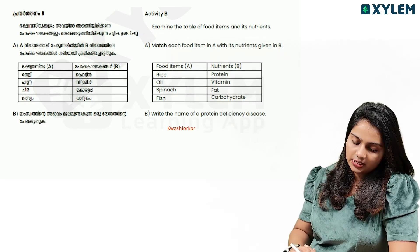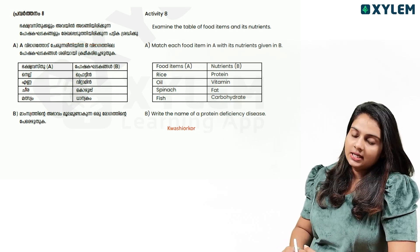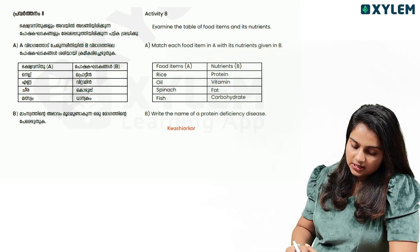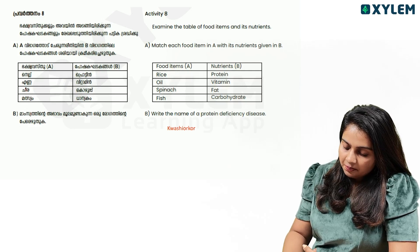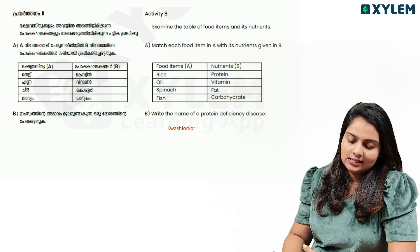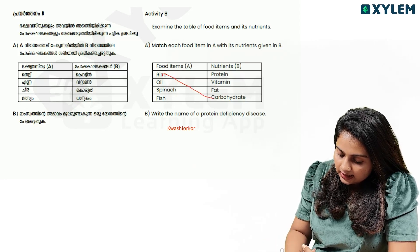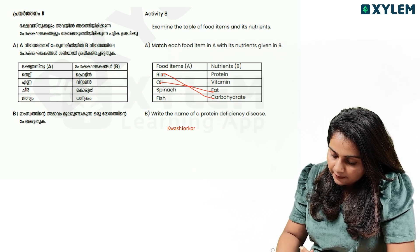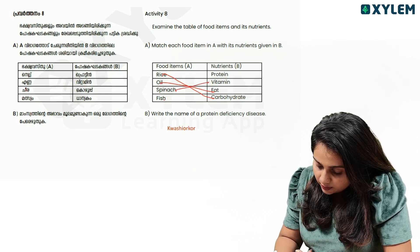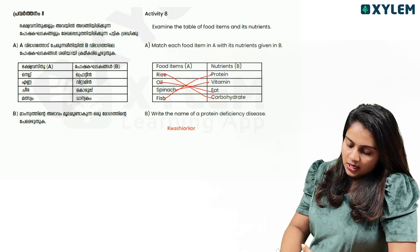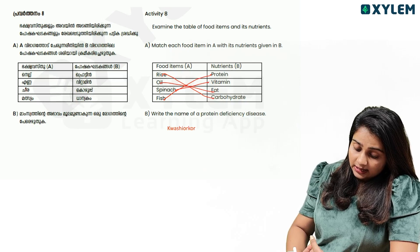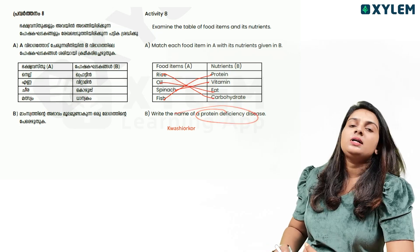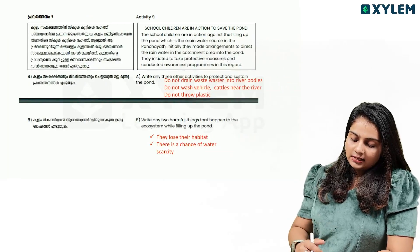Examine the table of food items and its nutrients. This is a table of food items and nutrients: rice, oil, spinach, fish — with protein, vitamin, fat, carbohydrate. Rice is carbohydrate, oil is fat, we use spinach in vitamins and fish in proteins. Write the name of the protein deficiency disease — if you have a protein deficiency, we will be sure of the answer.